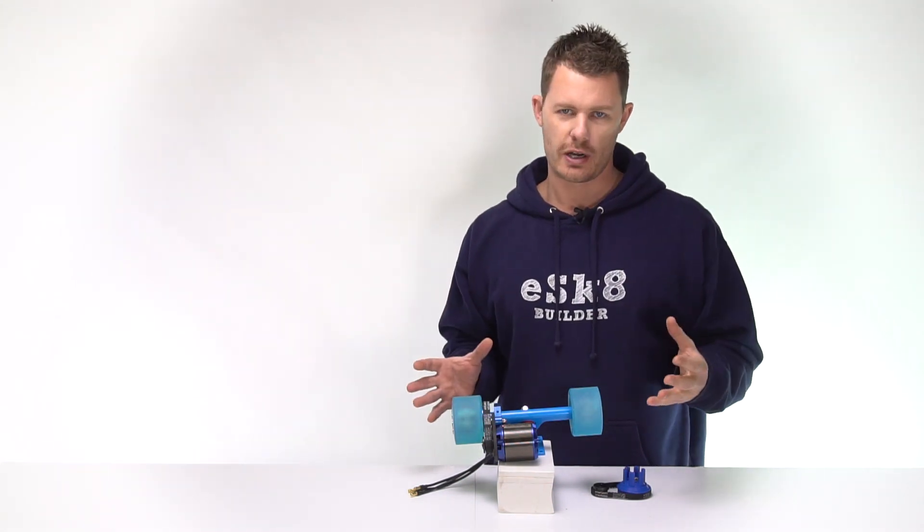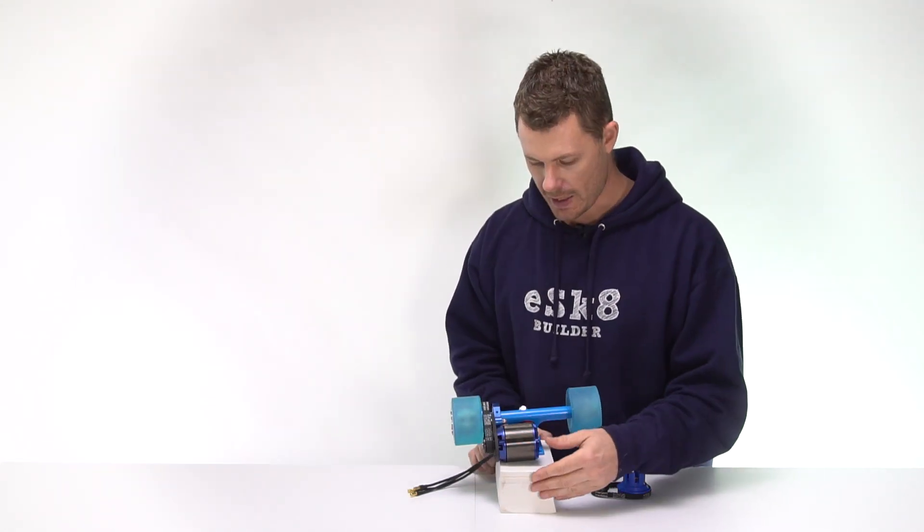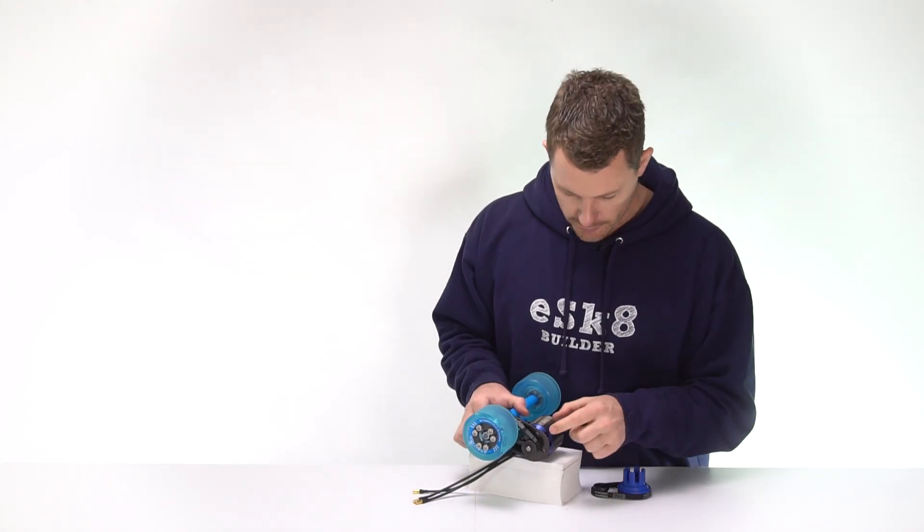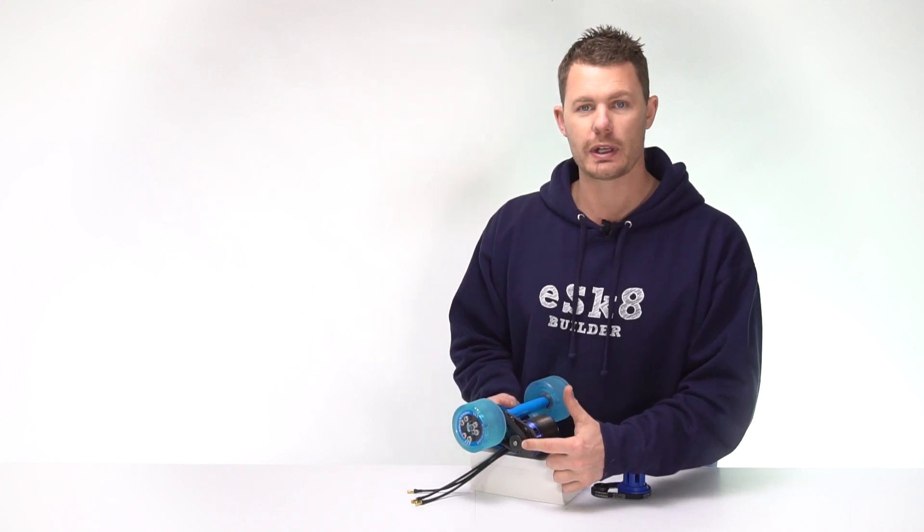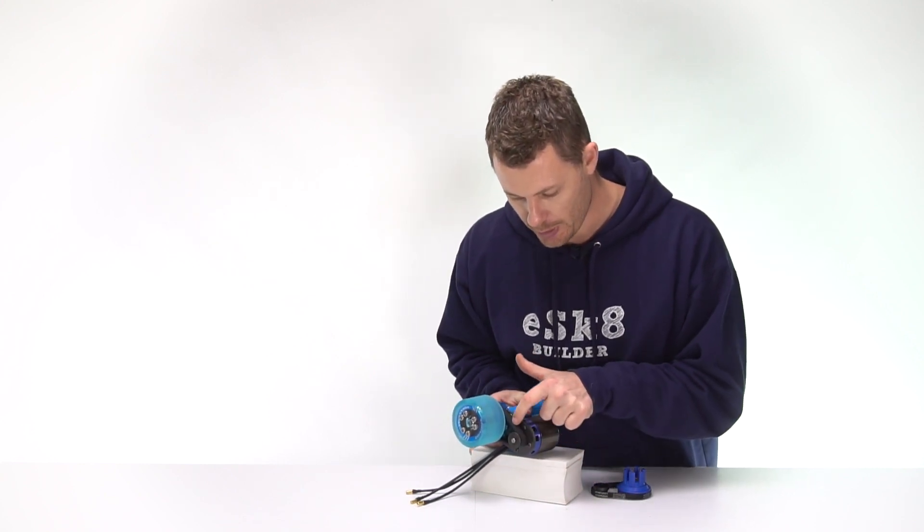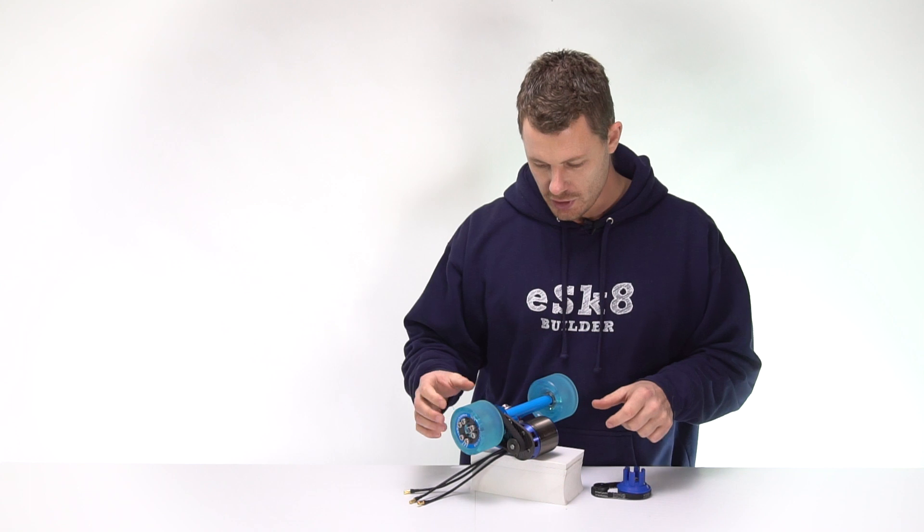So when I say drivetrain what am I talking about? Looking at this setup here we've got the motor which spins and it turns the motor pulley which has a belt on it that goes to the wheel pulley.